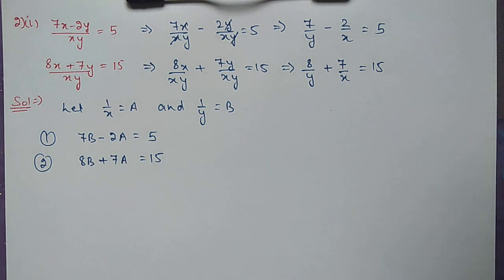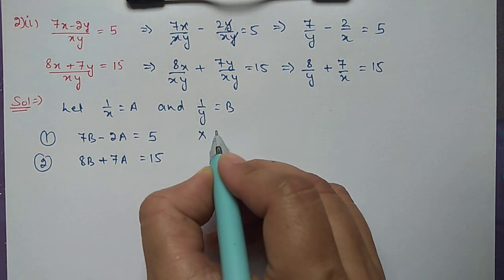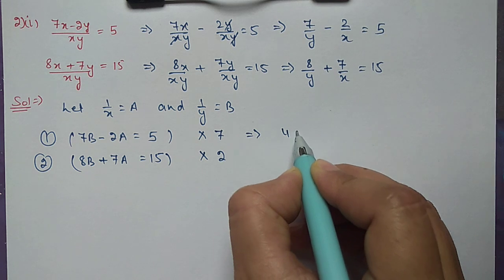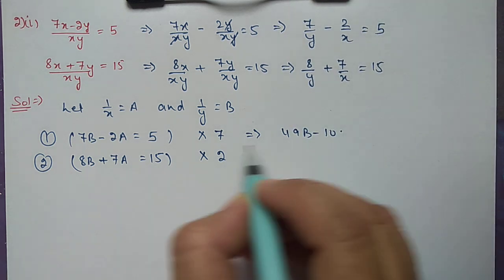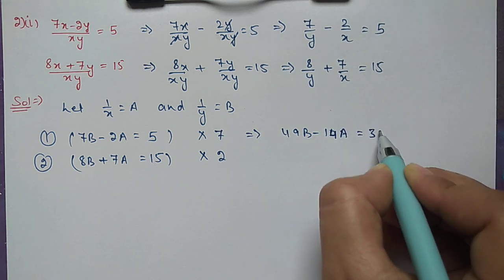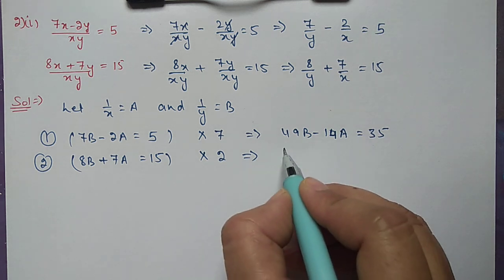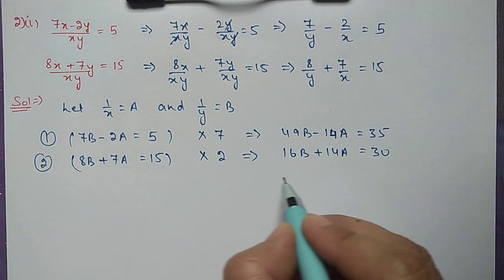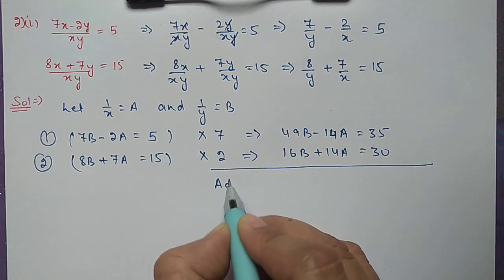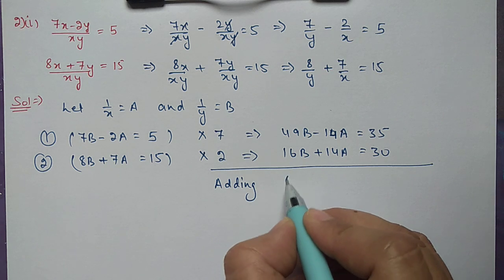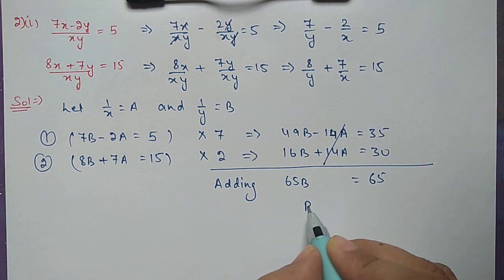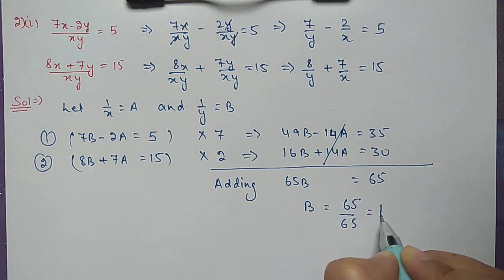The first equation becomes 7b minus 2a equal to 5, and the second equation becomes 8b plus 7a equal to 15. To make the a coefficients equal, we multiply the first equation by 7 and the second by 2. The first equation becomes 49b minus 14a equal to 35, and the second becomes 16b plus 14a equal to 30. The a coefficients are equal with opposite signs, so adding gives 65b equal to 65, meaning b equal to 1.